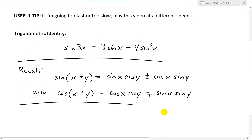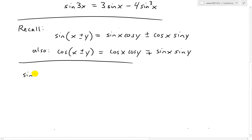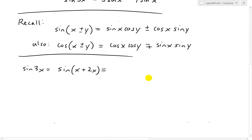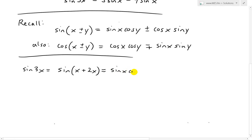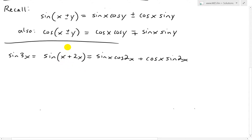The idea is to simplify by using this identity. We note that sine 3x equals sine of x plus 2x. Once we apply the addition identity, we get sine x cosine 2x plus cosine x sine 2x. We've removed the 3, but we're left with the 2, so we need to apply the sum rule again for both sine 2x and cosine 2x.